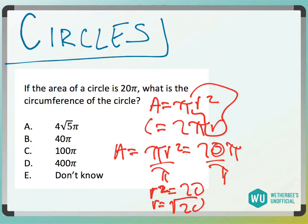Then if I know r is √20, I can plug it into my circumference equation, which is going to be circumference is 2π times r, which again we decided was √20, so 2π times √20.